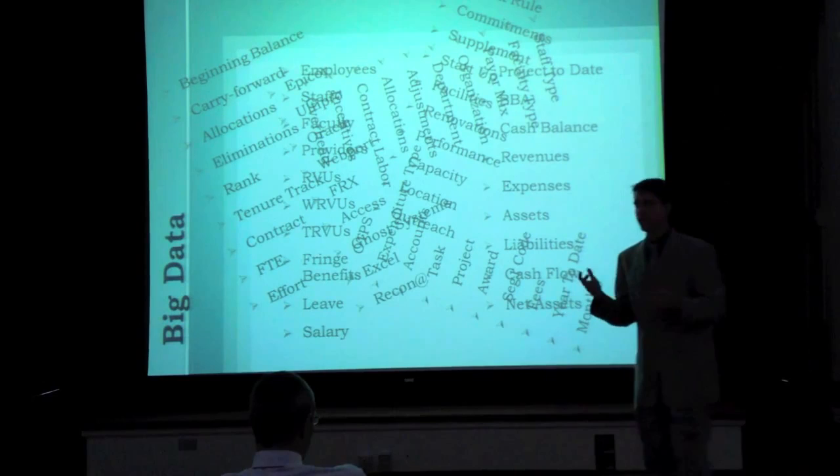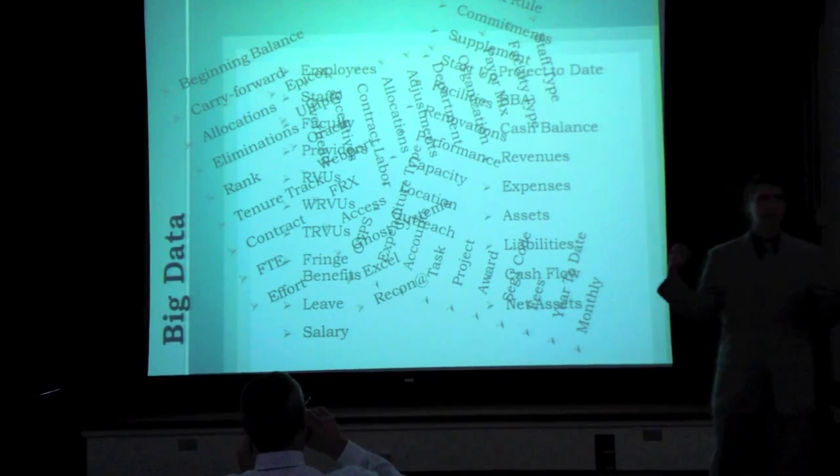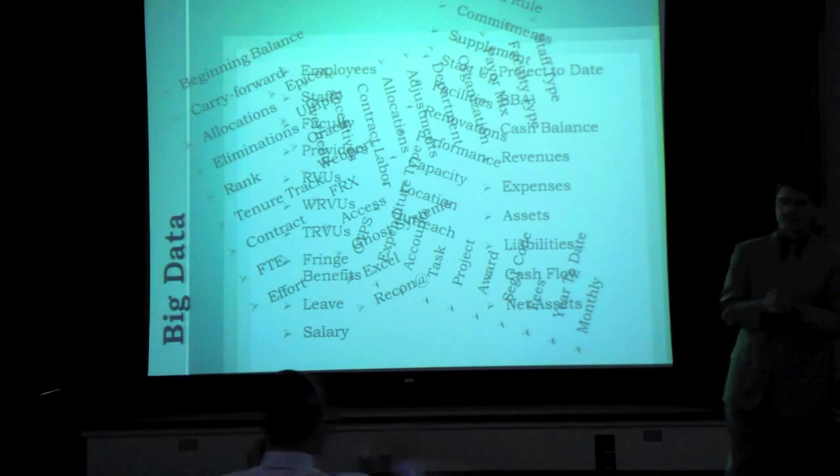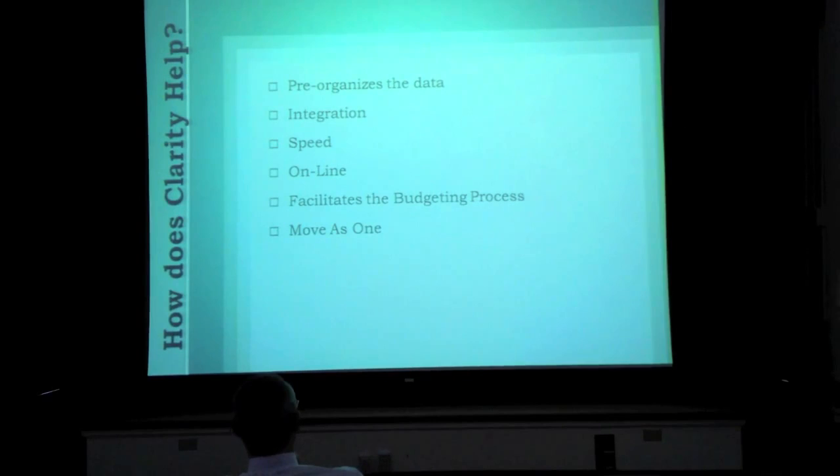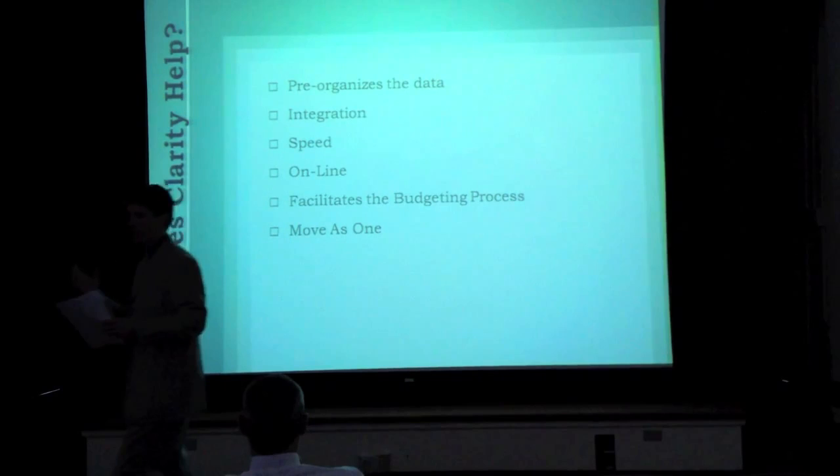What Clarity does is it's a big data system. It replaces most of that. It's able to go out and get the information in a big tent sort of way and then look at the information and report it back to us in a way that's easier for us to digest. It does this through a process. What Clarity does is it pre-organizes the information first. It's built on what's called a cube database.